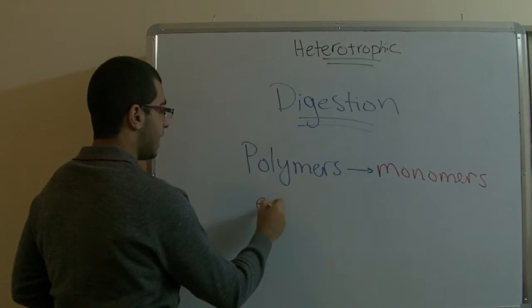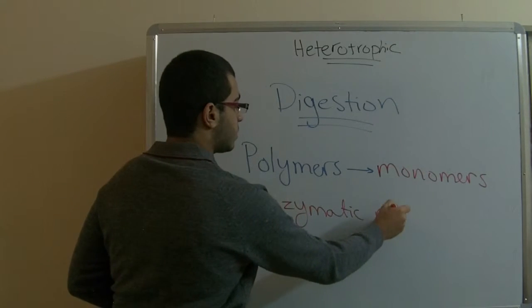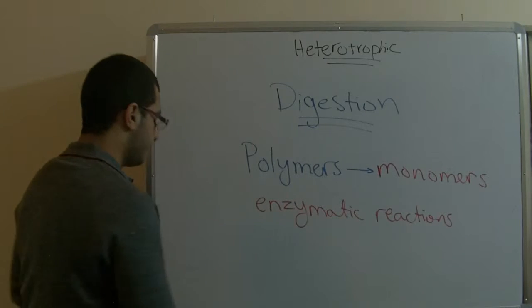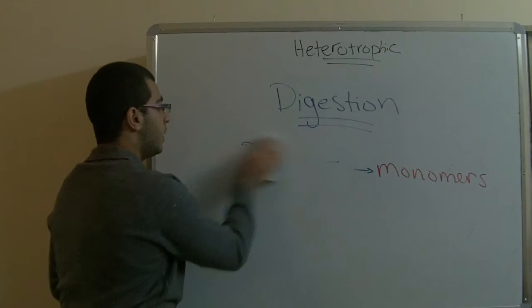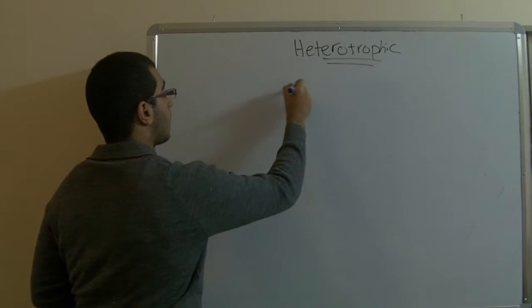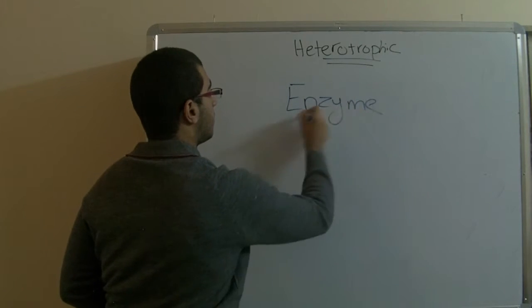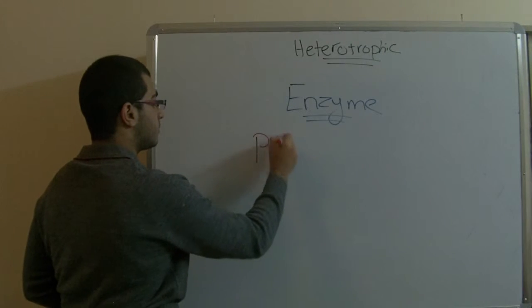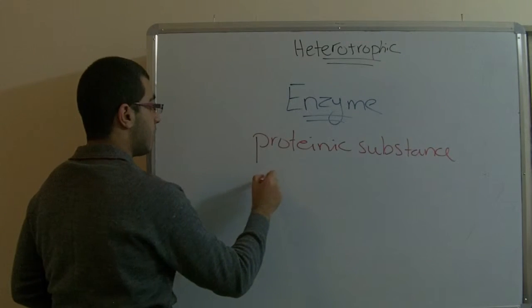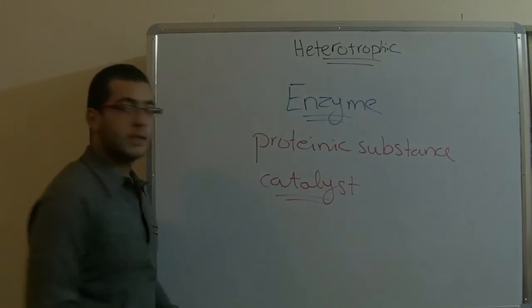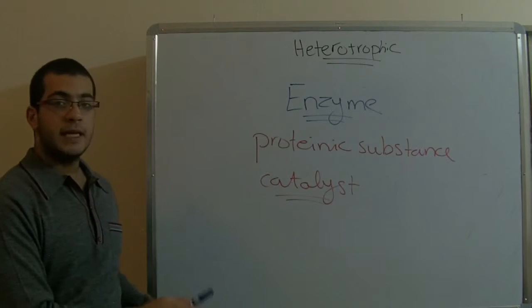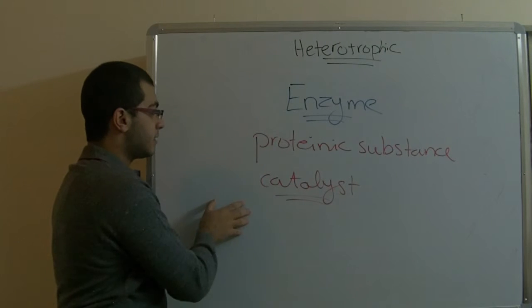Polymers are broken down into monomers by means of enzymatic reactions. The next point we will talk about is the enzymatic reaction. First, we will know the meaning of the word enzyme. The enzyme is a proteinic substance with the properties of a catalyst.